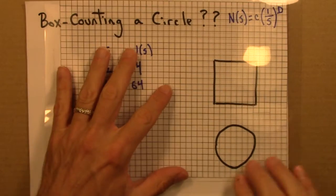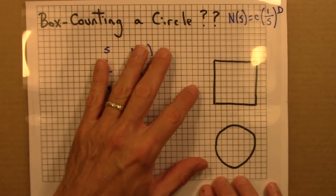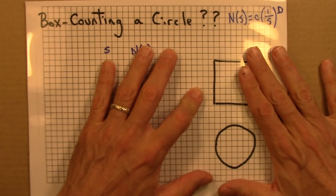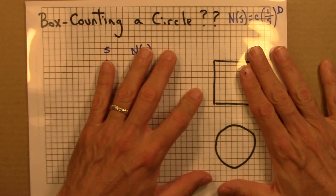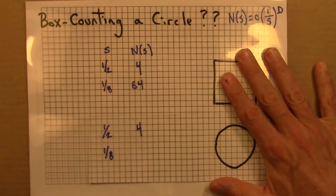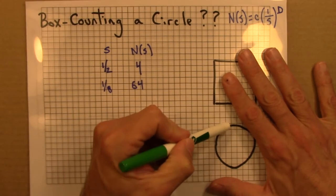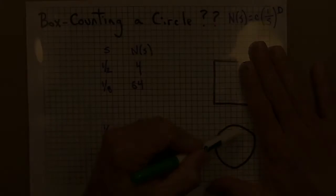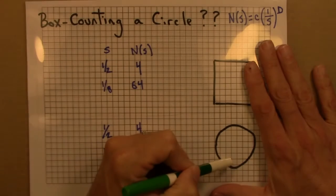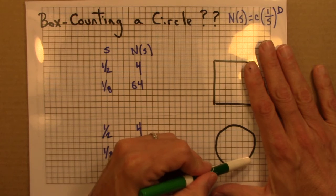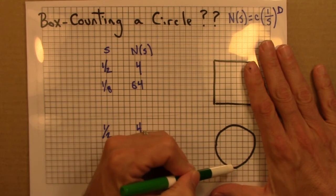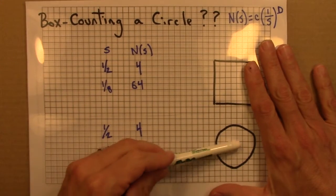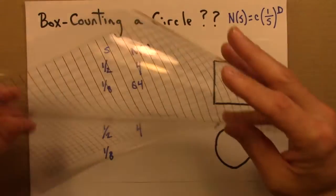Now let's do the same thing for the circle. Counting carefully: 1, 2, 3, 4, 5, 6, 7, 8, 9 ... 44, 45, 46, 47, 48, 49, 50, 51, 52. It takes 52 of these smaller boxes to cover the circle. So N(s) = 52.